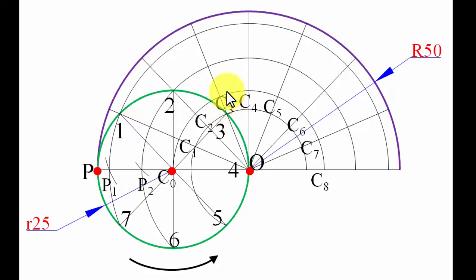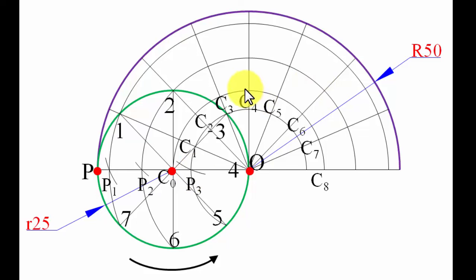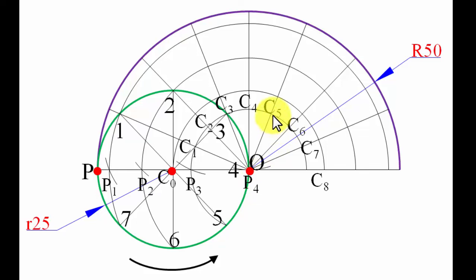With C3 as center and an arc passing through point 3, cut an arc to get P3 — again using radius 25 millimeters. With C4 as center, cut another arc. Notice this arc does not intersect any line but just touches the central line, giving P4. With C5 as center and arc through point 5, cut an arc to get P5.